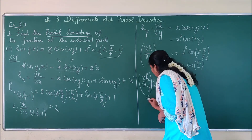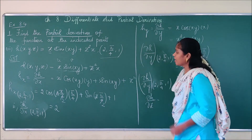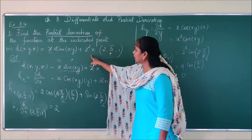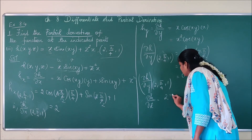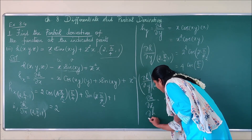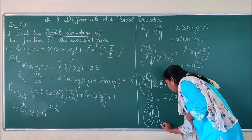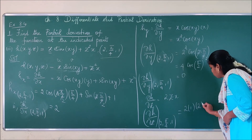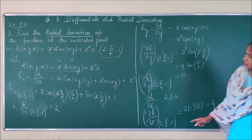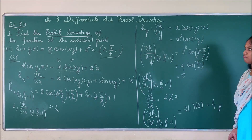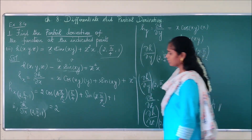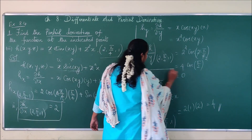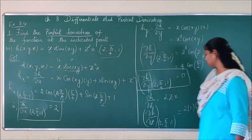Next is ∂h/∂z. There is no z in the first term x·sin(xy); I have z only in the z²x term. So I differentiate only that term. Differentiating z² with respect to z gives 2z, and since x is constant I get 2zx. So ∂h/∂z = 2zx. At the point (2, π/4, 1): 2·(1)·2 = 4. So ∂h/∂z at (2, π/4, 1) = 4. We have found all three partial derivatives at the given point: ∂h/∂x = 2, ∂h/∂y = 0, and ∂h/∂z = 4.